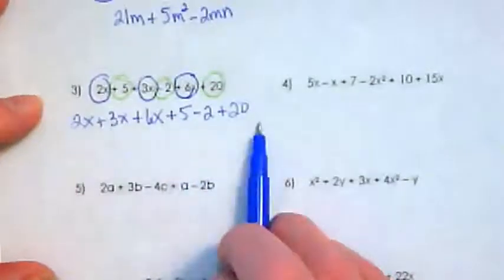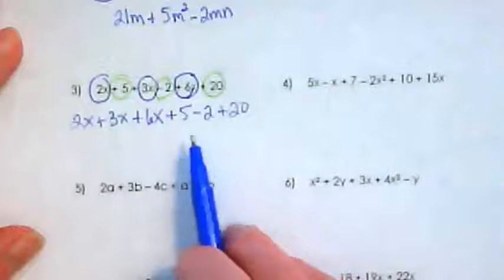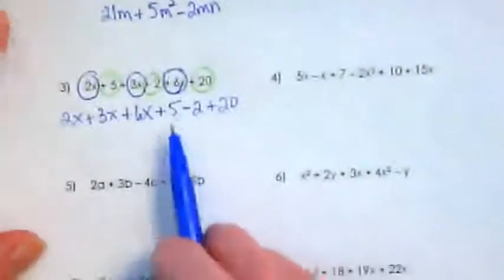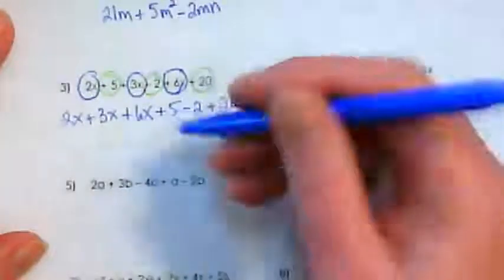These are just numbers with no variable. We call them constants in a little fancier way than just number. And I could say 5 minus 2 is 3, and 3 plus 20 is 23.